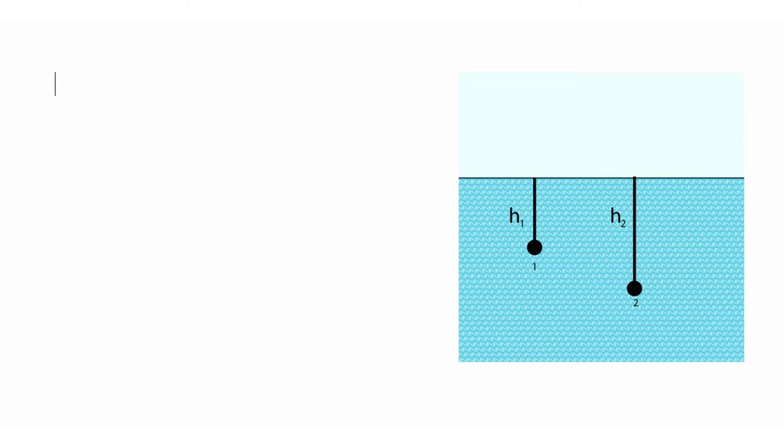Hi, we're back. So let's do the question. So we know that we have two different depths. And they're given here. H1, then we have H2. So let's find the pressure at each of these points.